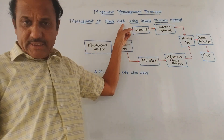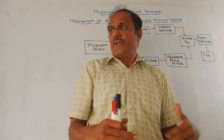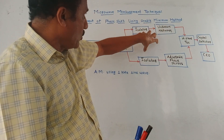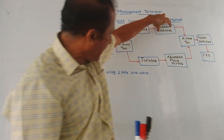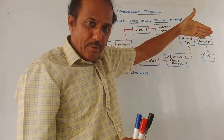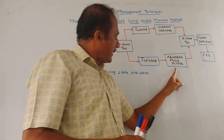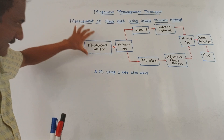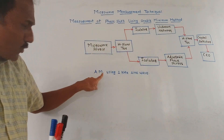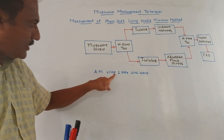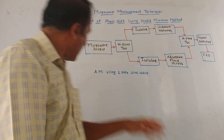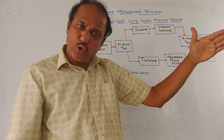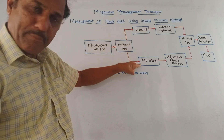The next part is measurement of phase shift using the double minimum method. If you know the electrical length of a network, the phase shift can be directly measured. This block schematic uses the double minimum method for measuring the phase shift of an unknown network. An adjustable phase shifter is used as a standard device. At the input side, a micro source provides a signal that is amplitude modulated using a one kilohertz sine wave. This AM signal is given to an H-plane T, which splits it into two parts — one applied to the upper isolator and one to the lower isolator.